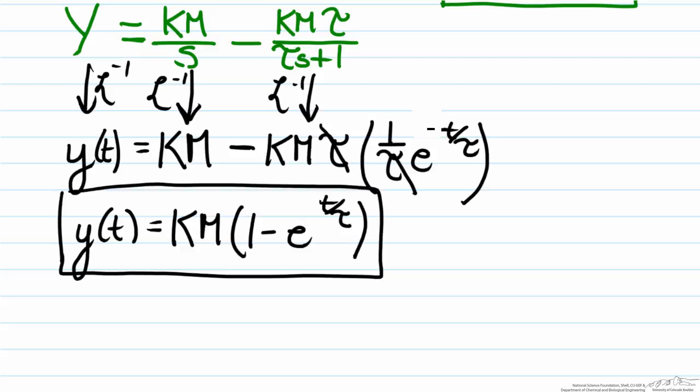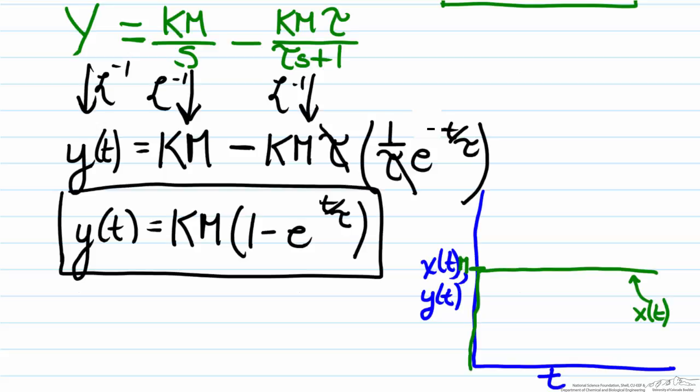So if we want to see what this means graphically we can see this is an exponential of some sort, so if we sketch this out where our x axis will be time and our y axis will be x of t and y of t, x of t will just be a step function of magnitude m, and if we were to sketch this of km times one minus e to the negative t over tau, it would look something like what is drawn here.